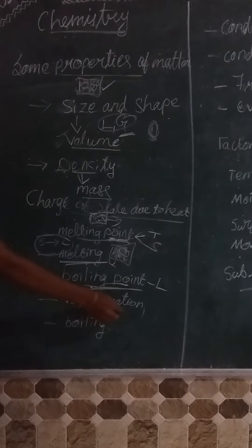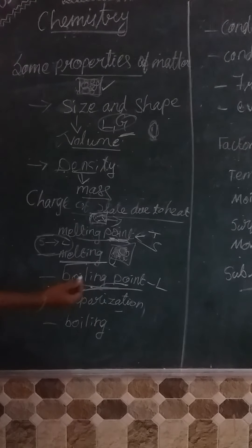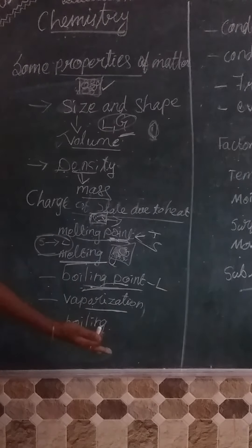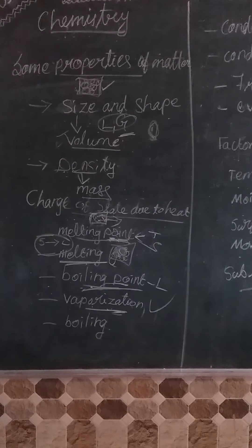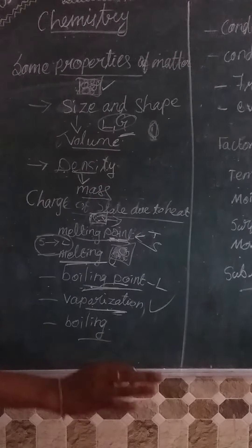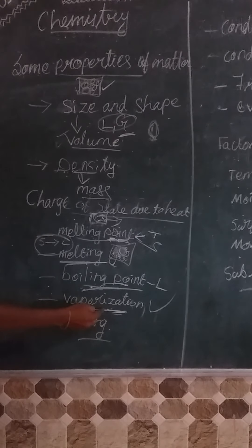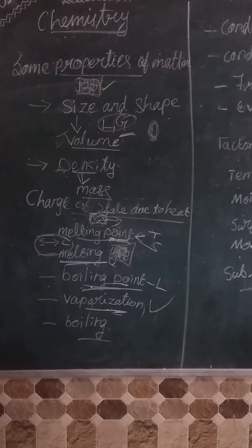What is vaporization? When we are heating the water and it starts to boil, when it starts to show vapor and vapor comes up — that starting point is called vaporization. What is boiling? We are heating the water — that process is called boiling. The vaporization takes place at the boiling point.